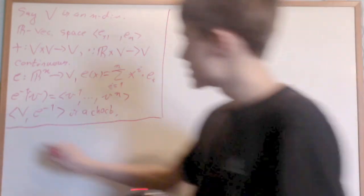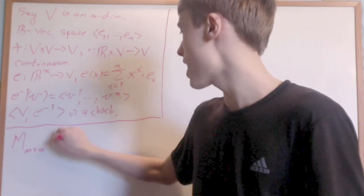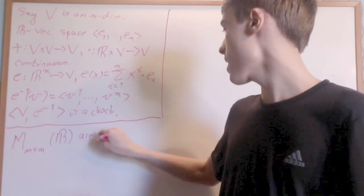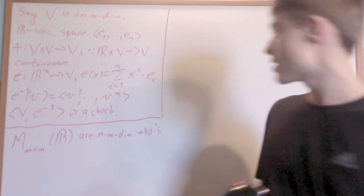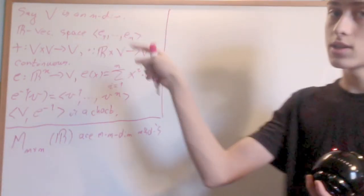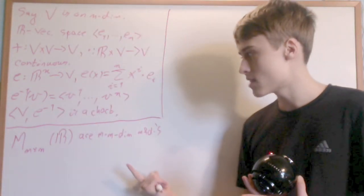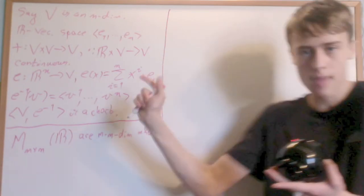What easily follows from this is that matrices, n by n matrices on R, are also manifolds. R m times n dimensional manifolds. Why? Because there's going to be m times n real numbers. You can just translate that very easily into R m times n.